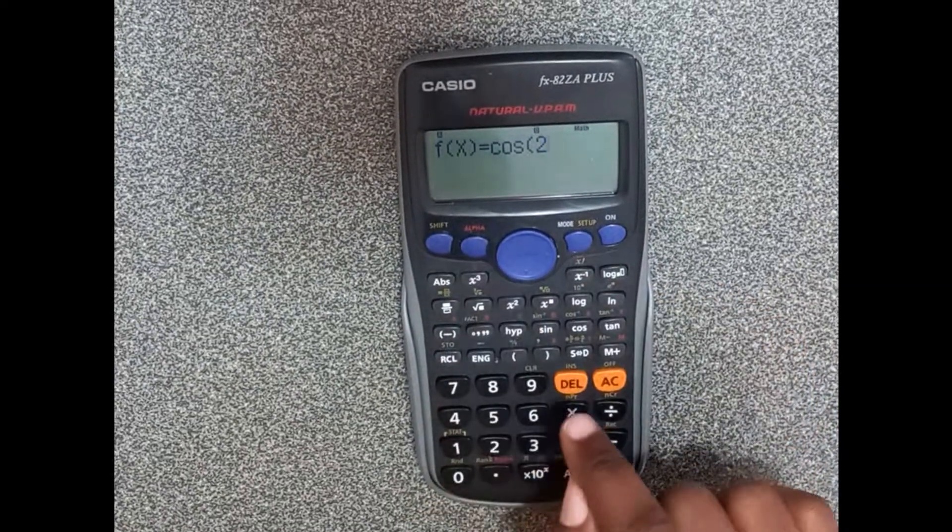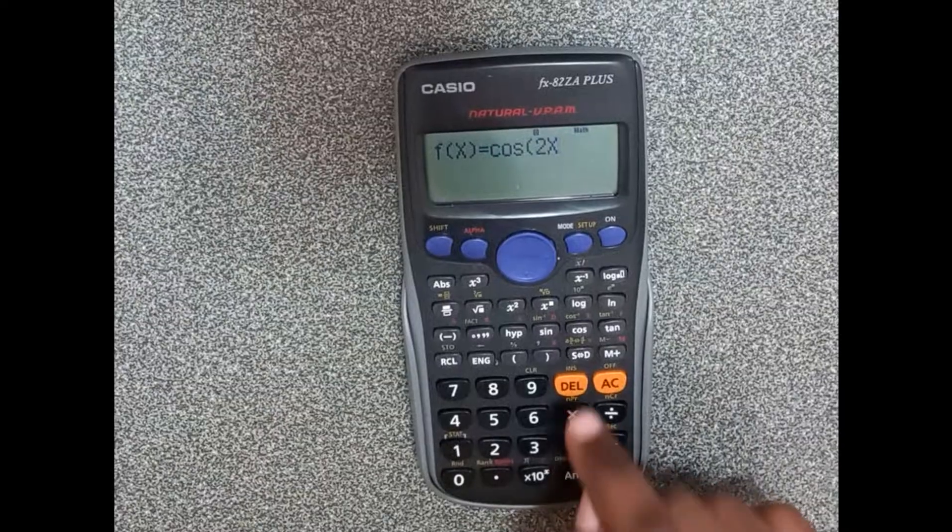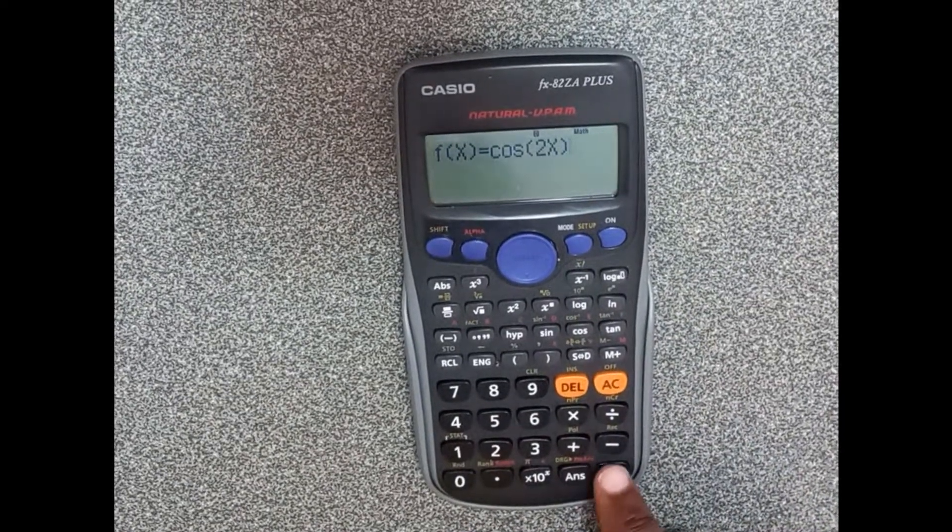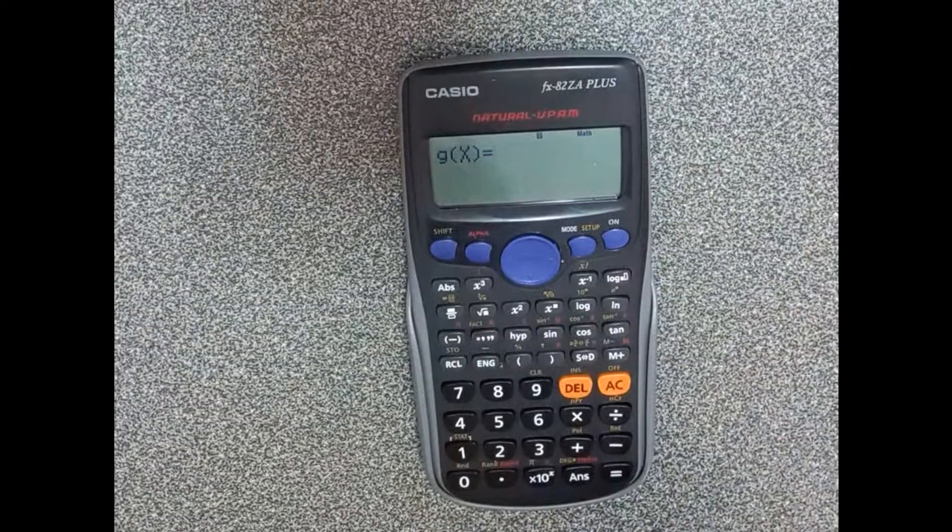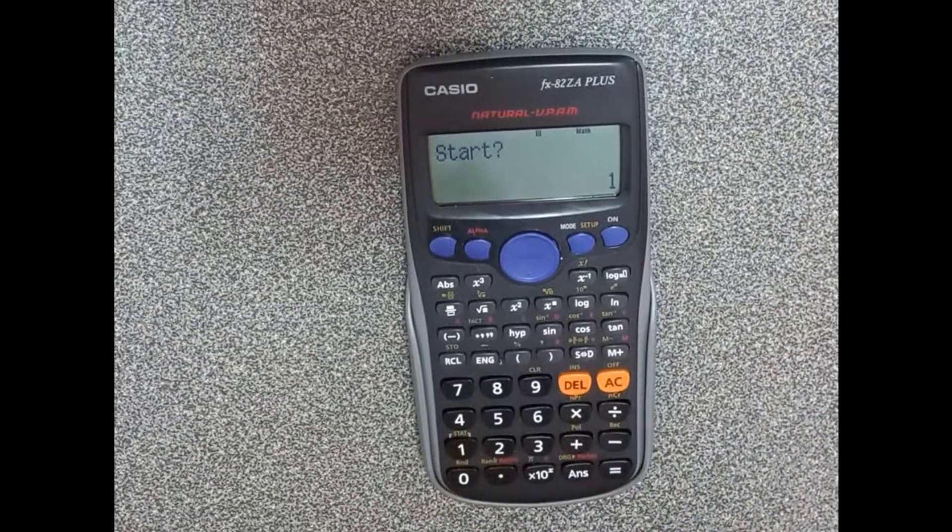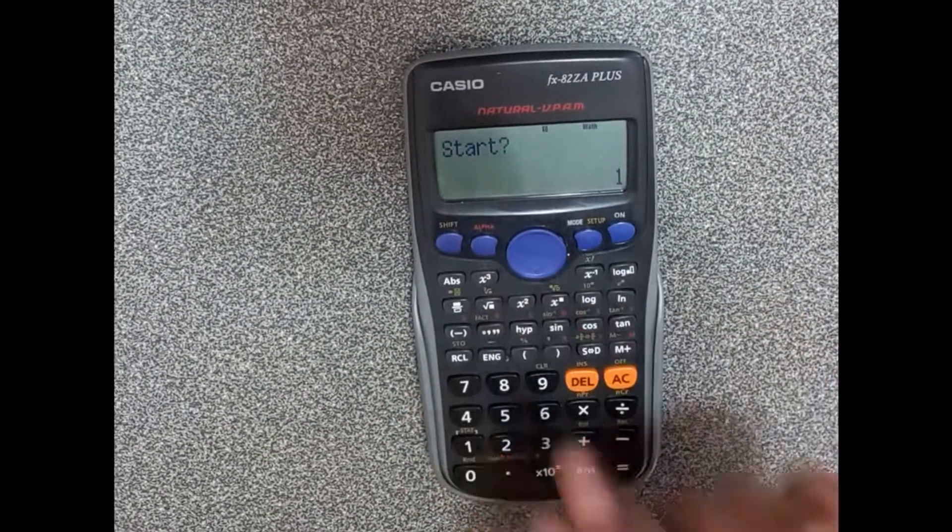Then you do alpha for your x, then you close your bracket, then you say equals. It's giving you the other function. We're doing one function, so you're going to press equals again. Then we're going to start. Our interval was minus 180.